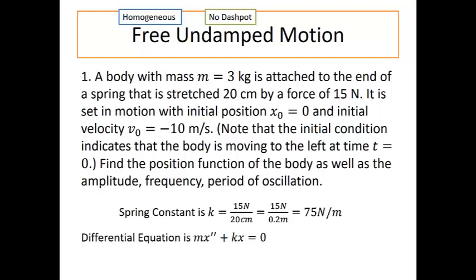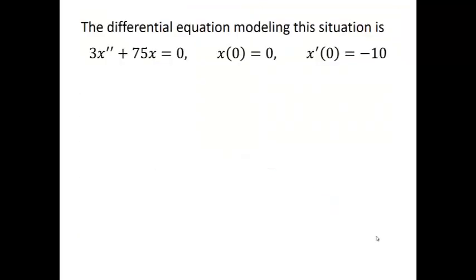Recall that our basic differential equation is going to look like mx double prime plus kx equals zero. And since we have a mass of three kilograms, our differential equation will become 3x double prime plus 75x equals zero. We also had an initial position of zero and initial velocity of negative 10, turning this into an initial value problem.